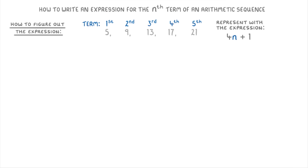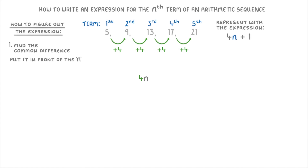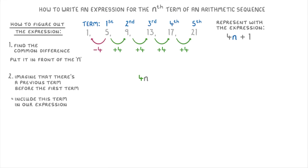The slightly trickier part is how to figure out the expression for a sequence in the first place. For this, we can use a neat trick. First, we need to find the common difference of our sequence, which is the number that's being added each time. So in this sequence, that would be 4, because 5 add 4 is 9, 9 add 4 is 13, and so on. Then we take this common difference and place it in front of the letter n, so our expression will start with 4n. Then to find out what's going to be added or subtracted, we have to imagine that there's a previous term before the first term. Because the common difference is 4 and our first term is 5, the previous term must be 4 less than 5, so positive 1. And then we include this term in our expression.